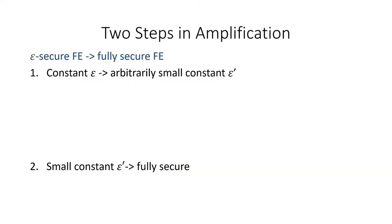We achieve our amplification in two steps. First, we show that any constant secure FE scheme can be transformed into an arbitrarily small constant secure FE scheme. Then, we show that from a small enough constant — say less than 1/6 — secure FE scheme, we can go to full security. We break this into two steps because we use two different constructions for the two transformations, as the parameters are quite sensitive, and neither construction by itself was sufficient to provide the entire amplification at once.